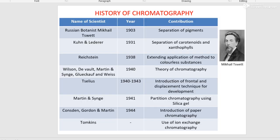Before going ahead, let me tell you about the history of chromatography. First, in 1903, Russian botanist Michael Tswett performed separation of pigments — that is, separation of colored compounds. This is the photograph of Michael Tswett. In the subsequent year, in 1931, Kuhn and Lederer performed separation of carotenoids and xanthophylls. In 1938, Ritzstein extended the application of the method to colorless substances.